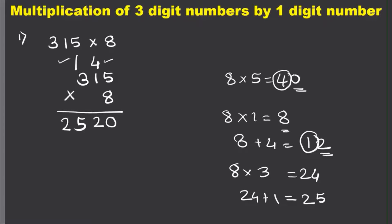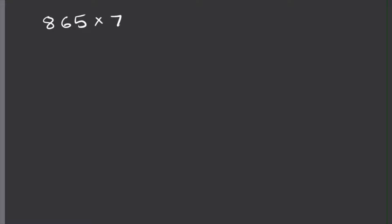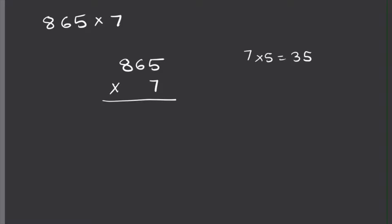Let's take another example: 865 times 7. The first thing we need to do is line this problem up. So we have 865 times 7 — make sure that 5 and 7 are lined up because they are in the ones place. Now we are ready to multiply. 7 times 5 is 35, so I write 5 here and carry the 3 to the tens place.